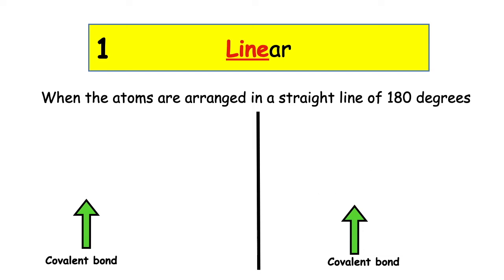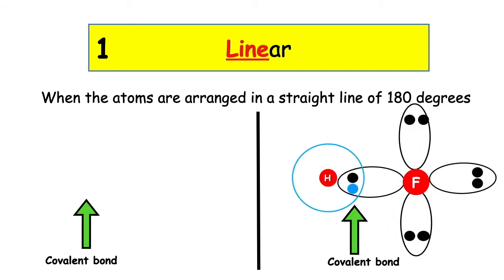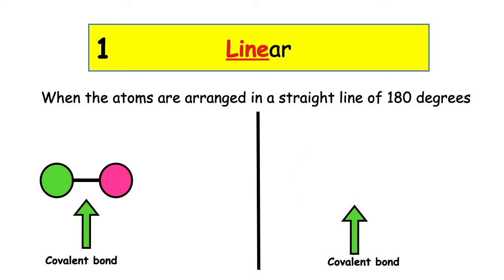Different elements can also form covalent bonds. Let's take hydrogen fluoride as an example. The covalent sharing diagram for hydrogen fluoride, HF, shows one shared pair of electrons and one covalent bond. Pictorially, we have one pink atom and one green atom — the colours represent the different types of elements. When drawing this out, we would write H–F. This is how we show the linear structure of hydrogen fluoride.